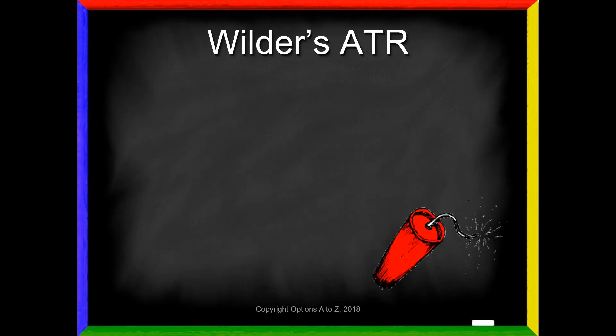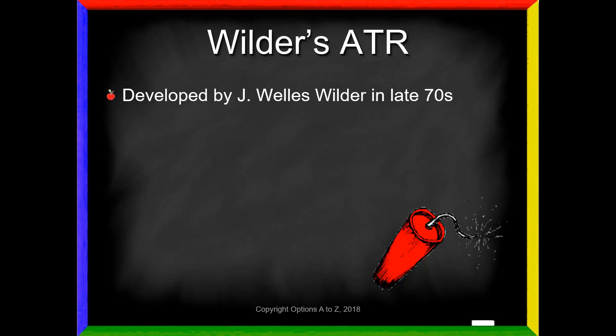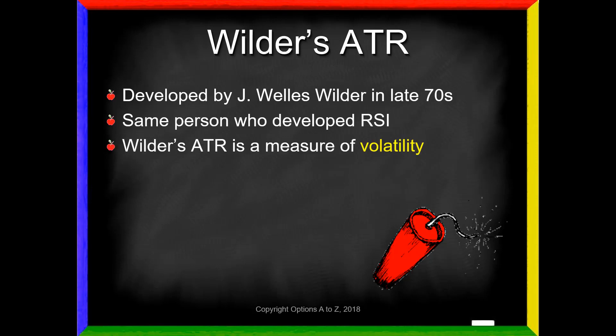Wilder's average true range was developed by J. Wells Wilder in the late 70s. This is the same J. Wells Wilder who developed RSI, the relative strength index that we've seen before. Remember, Wilder's average true range is a measure of volatility. It is non-directional.